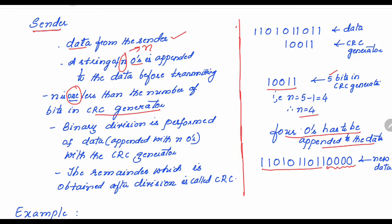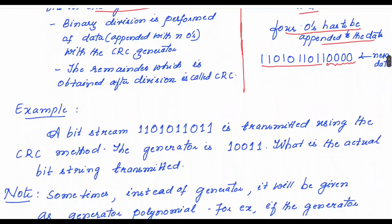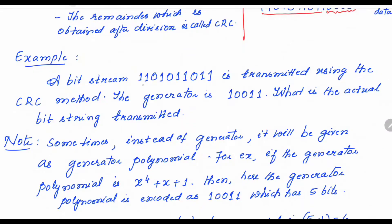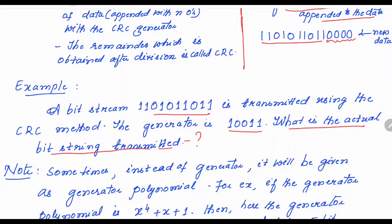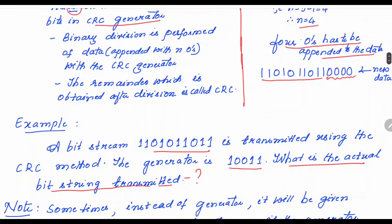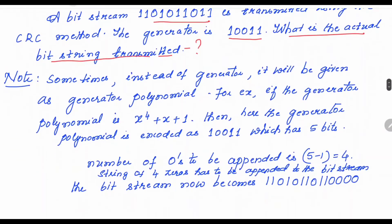The example question is: a bit stream 1 1 0 1 0 1 1 0 1 1 is transmitted using the CRC method and the generator is 1 0 0 1 1. What is the actual bit stream transmitted? To find this, follow the steps of the CRC technique. Note that sometimes the generator polynomial is given instead, for example x to the power of 4 plus x plus 1, which encodes as 1 0 0 1 1.